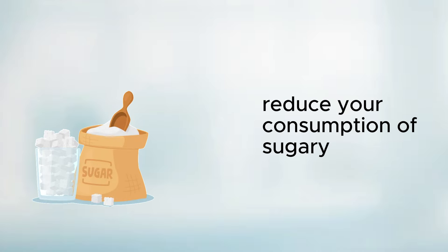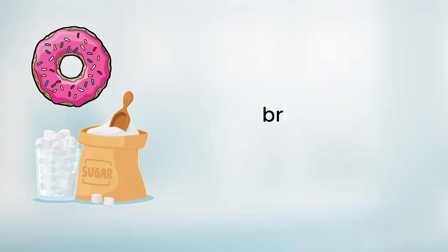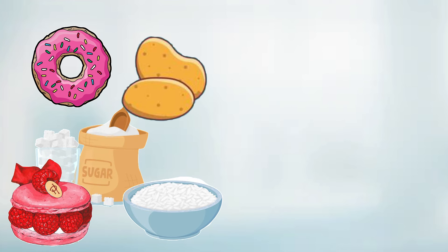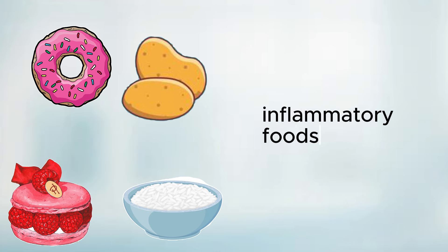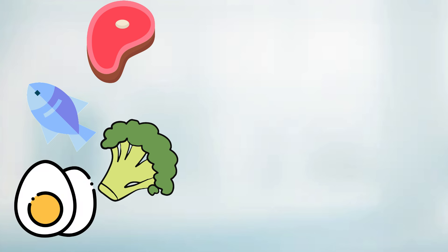Three, reduce your consumption of sugary, starchy, and grain-based foods such as sweets, bread, pastries, pasta, rice, and potatoes. Replace these items with anti-inflammatory foods like wild-caught fish, grass-fed meats, and pasteurized eggs. These protein sources are also rich in choline and lean nutrients that actively aid in fat removal from the liver.